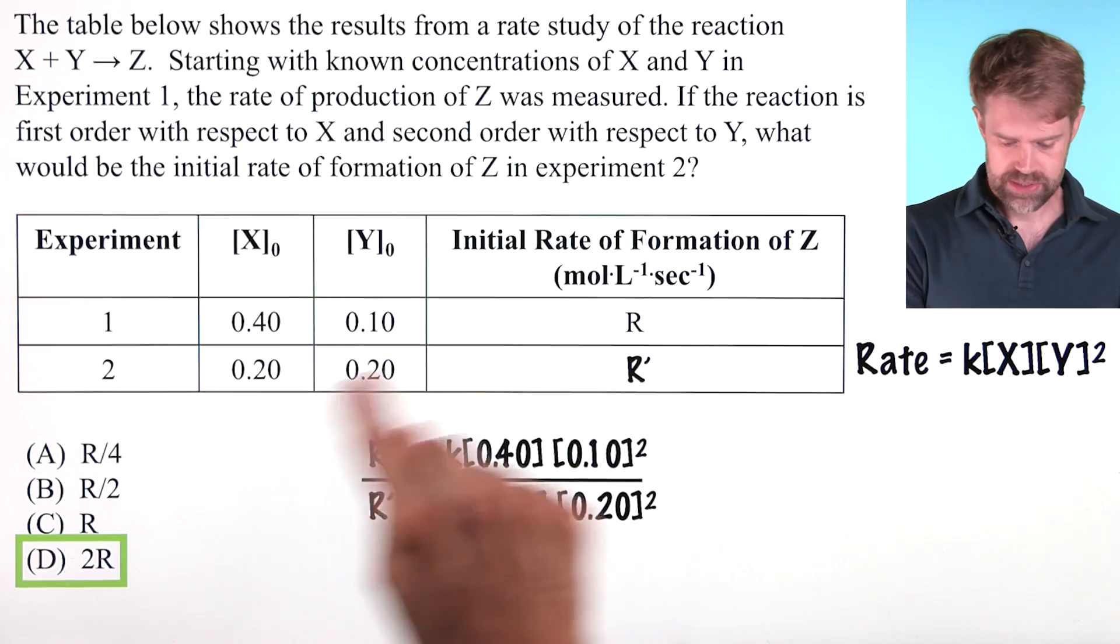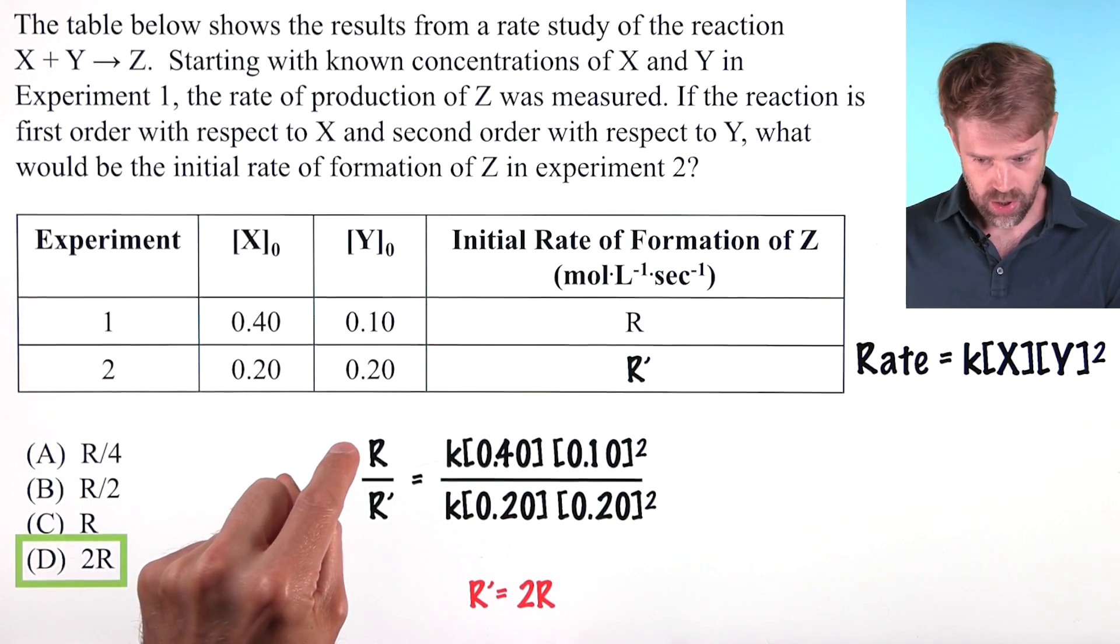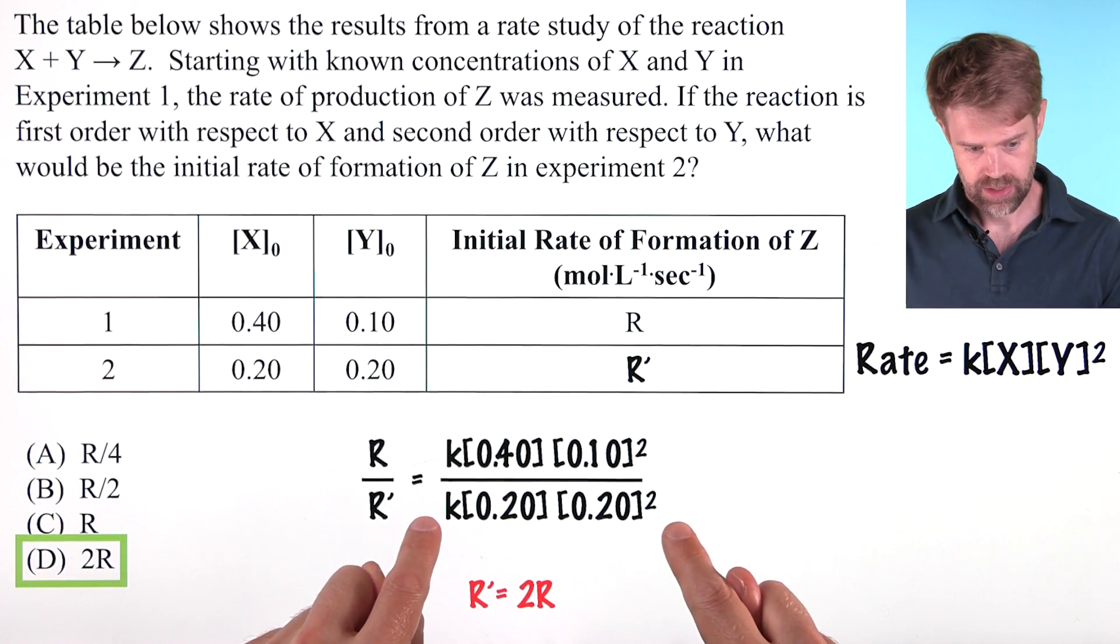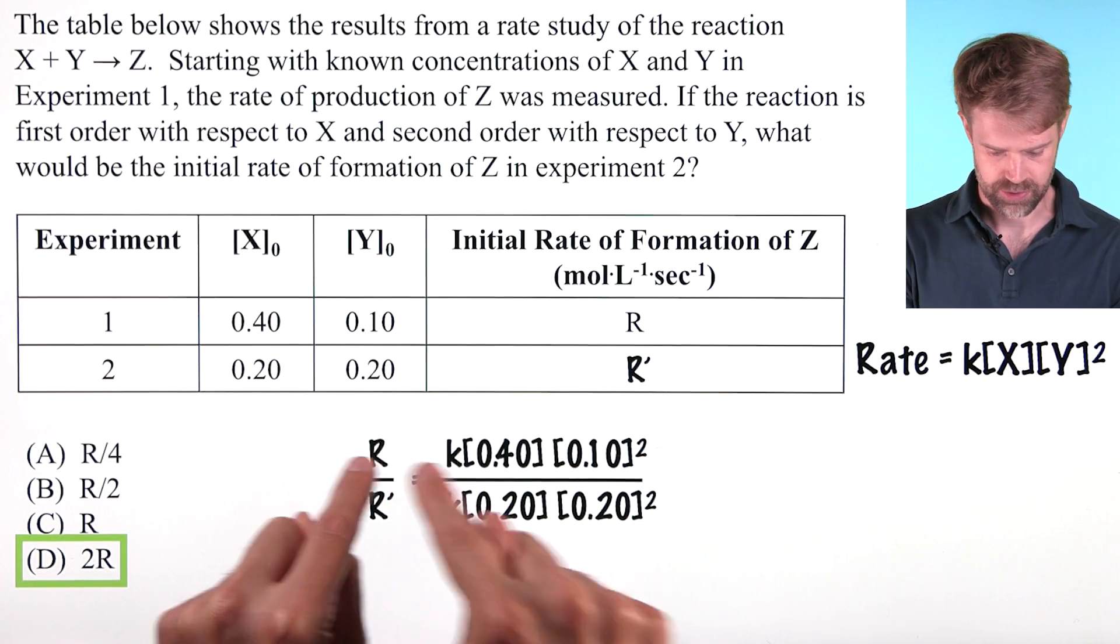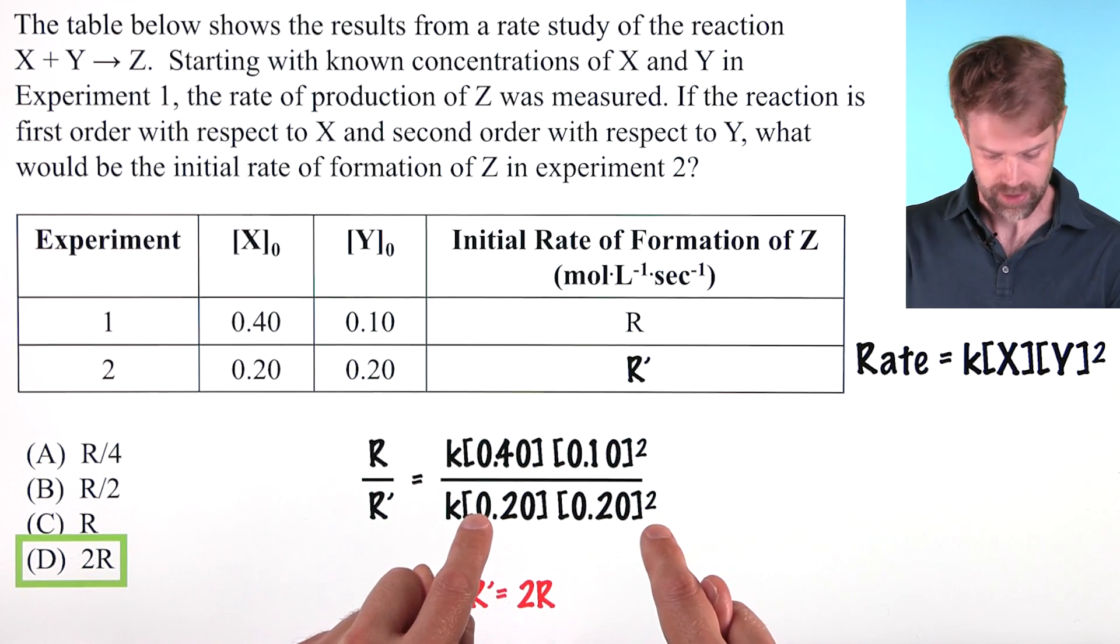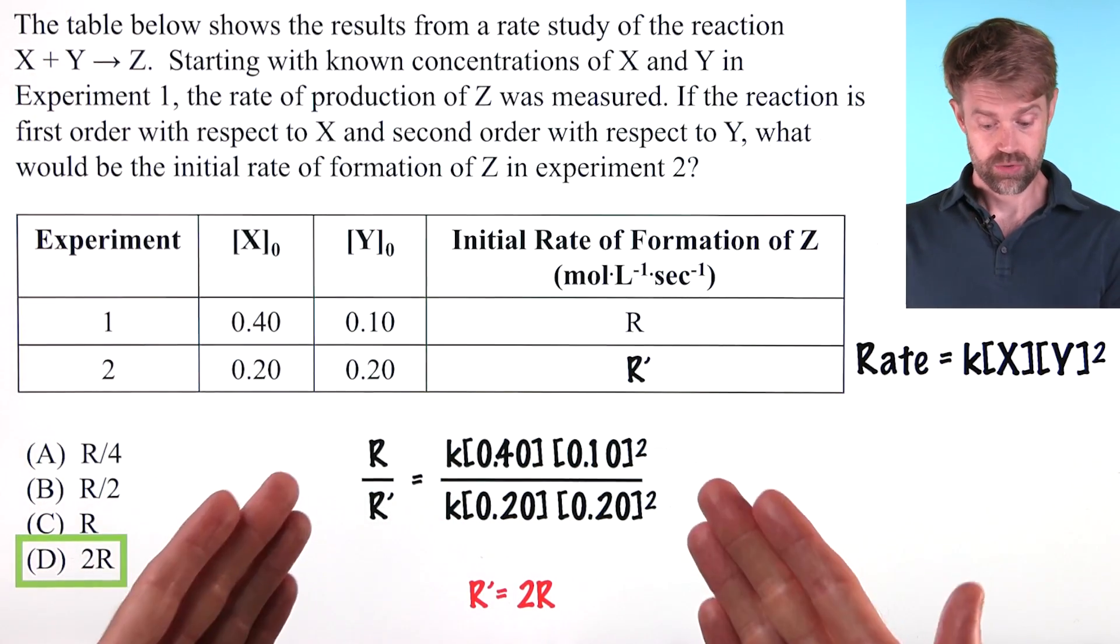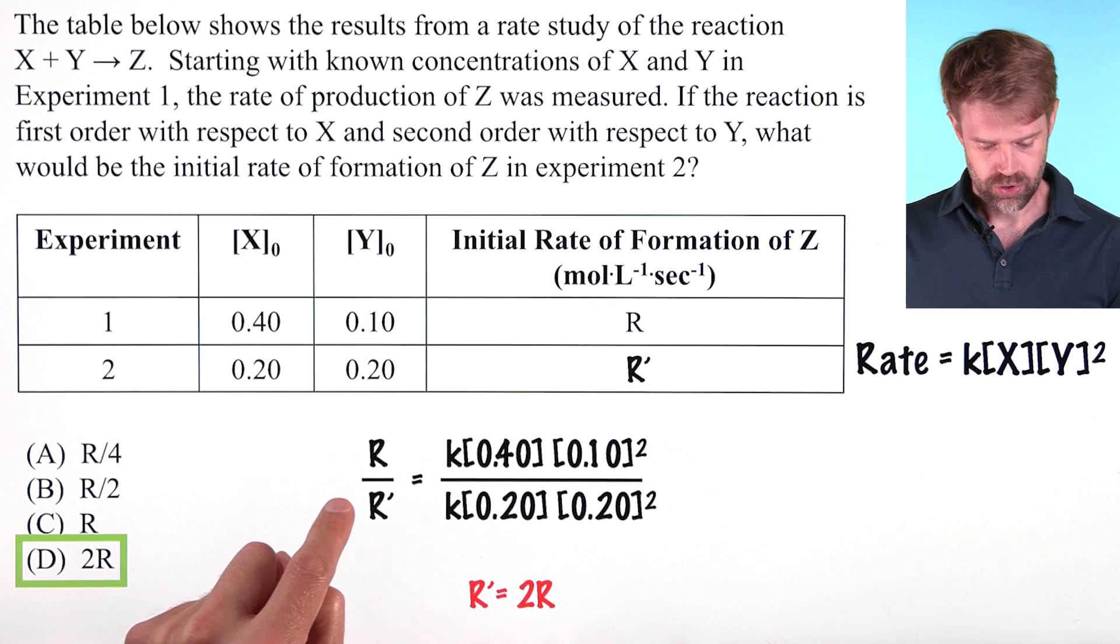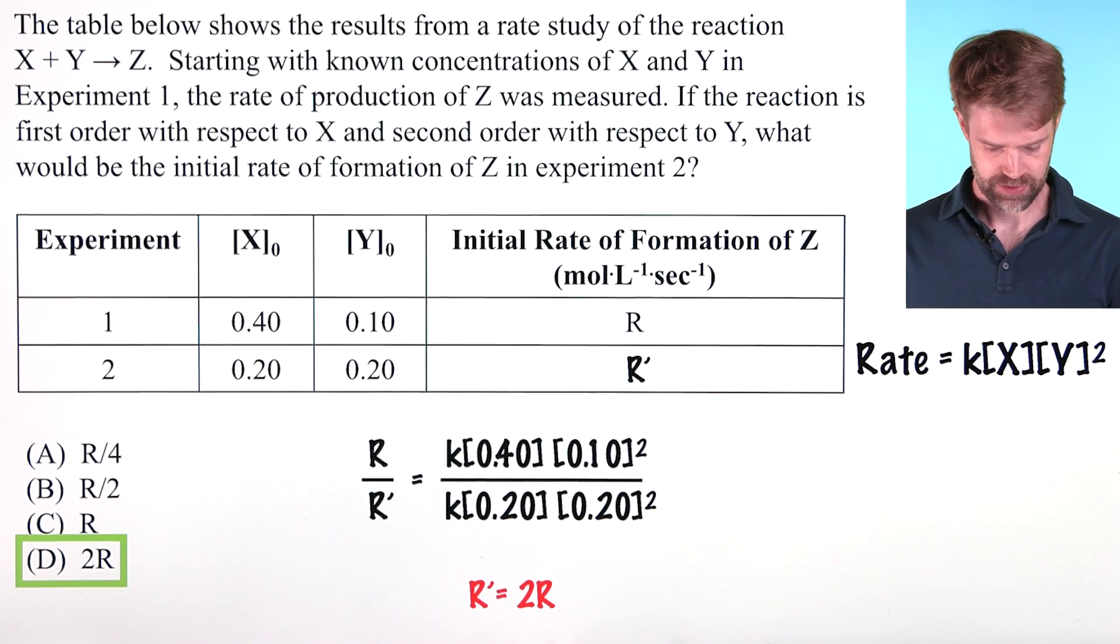And now finally, you could set up an algebraic equation like this with R over R prime on one side of the equation. And on the other side, the rate equations. The rate equation for experiment 1 is on top because it corresponds with R. The rate equation for experiment 2 is on the bottom in the denominator because it corresponds with R prime. Work through this algebraically, and if you solve for R prime, you will clearly get that R prime equals 2R, again choice D.